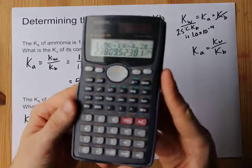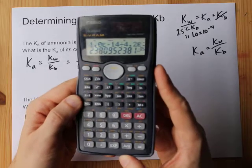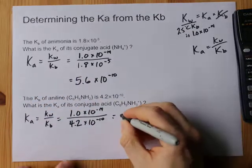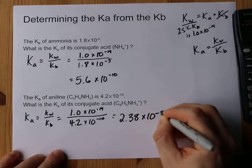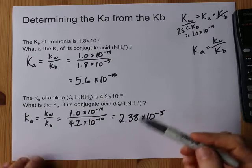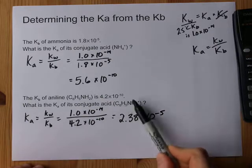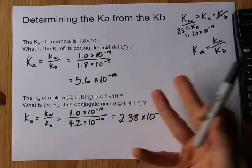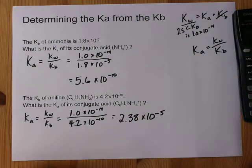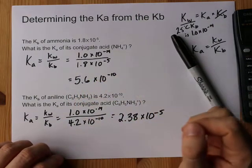2.38 times 10 to the negative 5. That's it. Then if you're given a solution that contains that, you can calculate the concentration of H plus that's made, get the pH. You know all that jazz. That is probably the later part of the question for you.